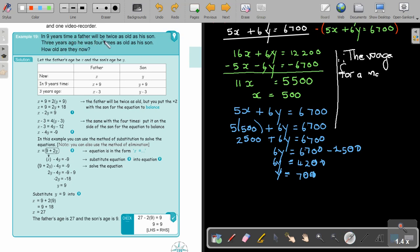In nine years' time, a father will be twice as old as his son. Three years ago, he was four times as old as his son. How old are they now? So make a table for the son. Make the father X, make the son Y. Sometimes we use one unknown, but that makes it more difficult. In this case, it's easier to work with two unknowns. So in nine years' time, that means X plus nine, he will also be Y plus nine. Three years ago, X minus three, Y minus three.